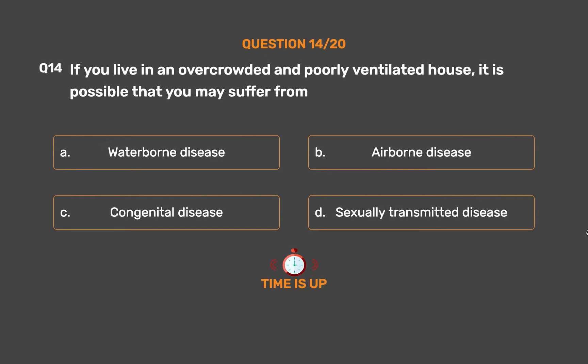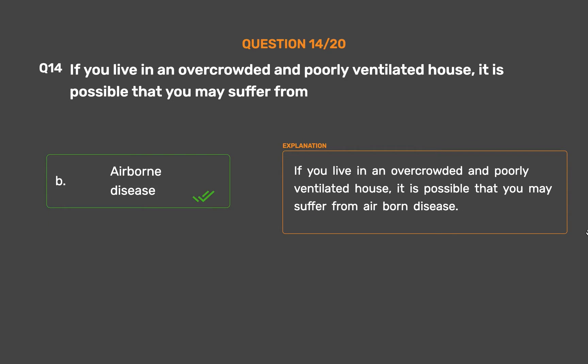The correct answer is Option B: Airborne disease. If you live in an overcrowded and poorly ventilated house, it is possible that you may suffer from airborne disease.